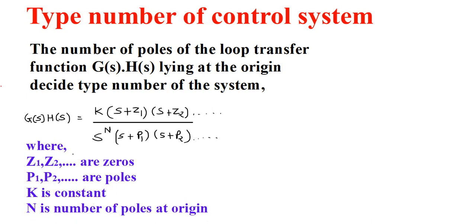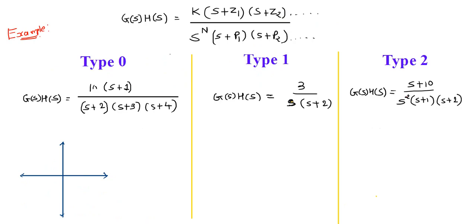Now I will explain type 0, type 1, and type 2 systems by taking examples of transfer functions. The loop transfer function G(S)H(S) equals K(S+Z1)(S+Z2)... in the numerator and S^N (S+P1)(S+P2)... in the denominator.